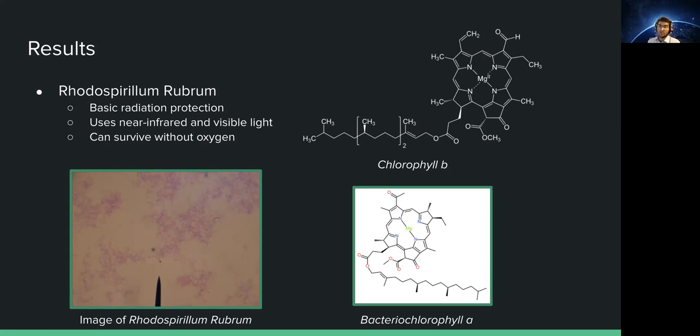Secondly, it has basic radiation protection. The bacteria has been used in multiple radiation studies and could potentially survive under harsh UV, X-ray, and gamma radiation seen on Proxima b.